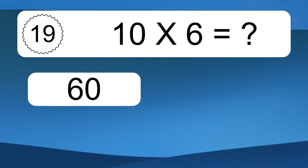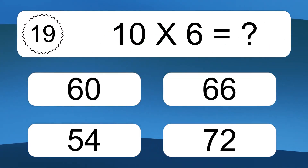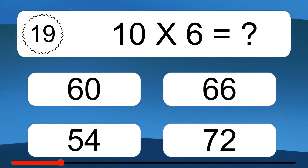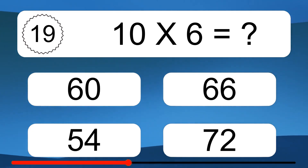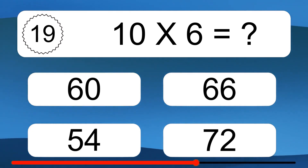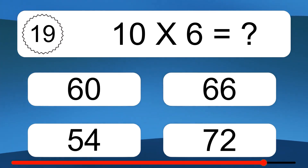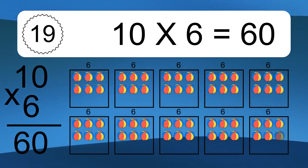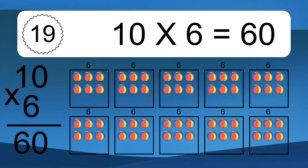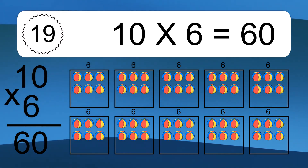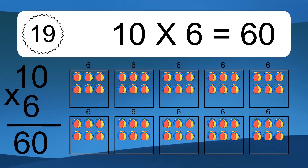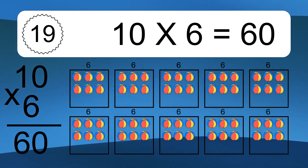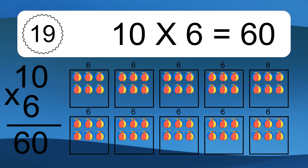Ten times six equals what? Ten times six equals 60. We have ten boxes, and each box has six colorful balls inside. If you count all the balls in all the boxes together, you will have ten times six balls. This equals 60 balls.